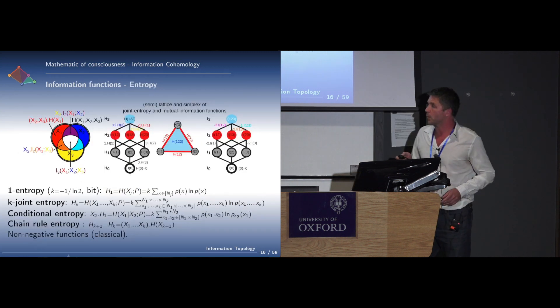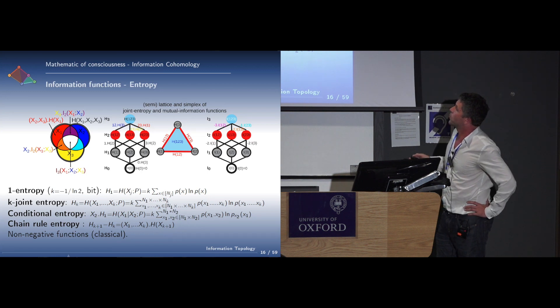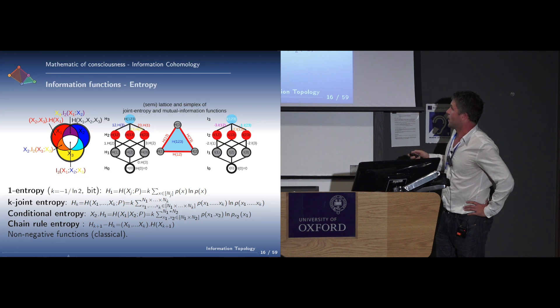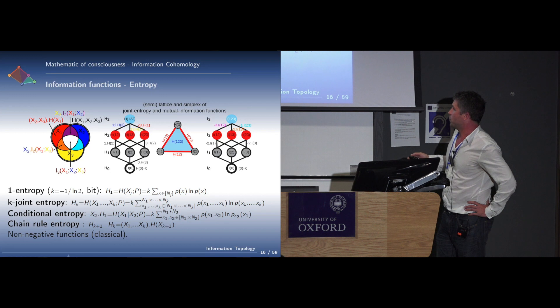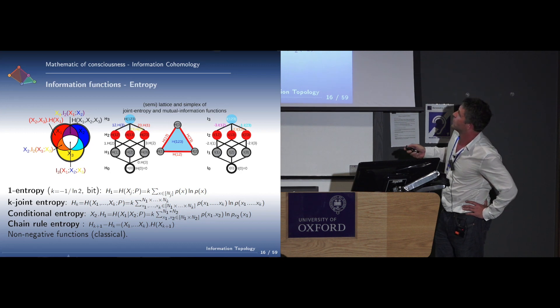The information functions we consider are the usual entropy, which is the Shannon entropy, the joint entropy, the conditional entropy, and the chain rule, which basically says that the entropy of k+1 variables minus the entropy of k variables equals the entropy of the k+1 variable conditioned by the other ones. This is fundamental for the cohomology.